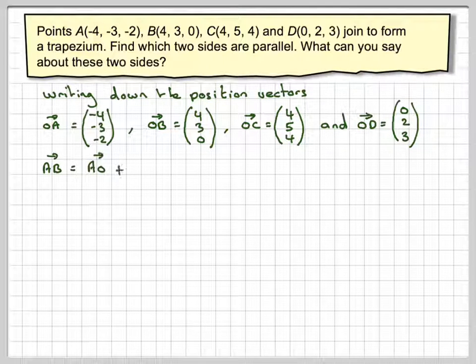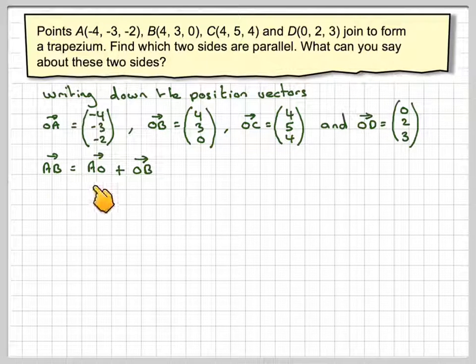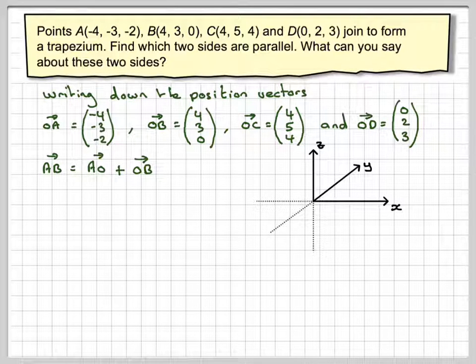We need to find length vectors AB, BC, CD, and DA. So AB is AO plus OB. Now, why that is so, let's have a look at this diagram. This is a set of 3D axes, X this way, Y going into the page, Z upwards.